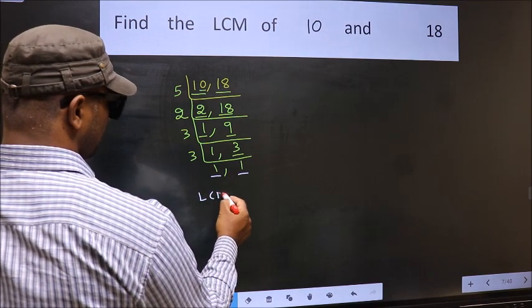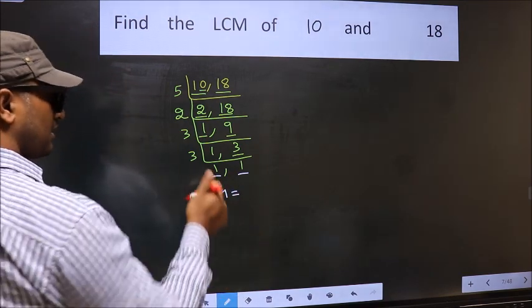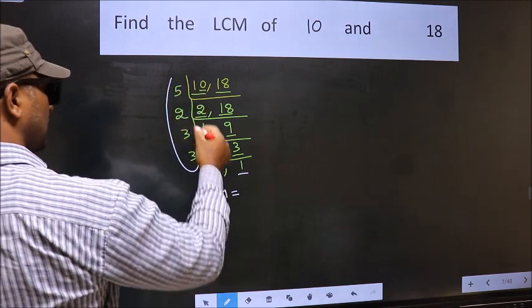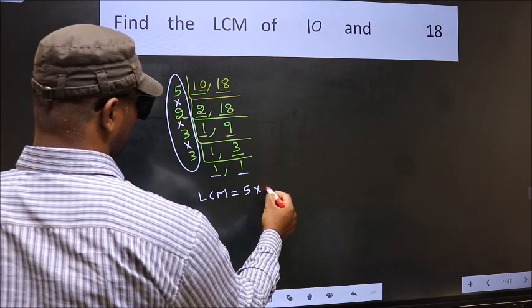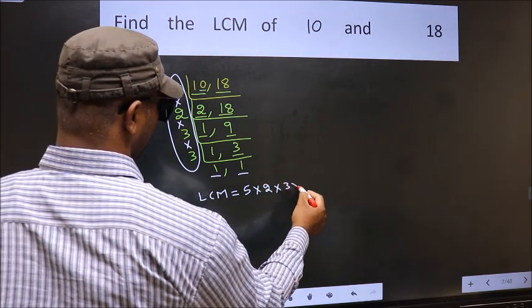So our LCM is, LCM is the product of these numbers that is 5 into 2 into 3 into 3.